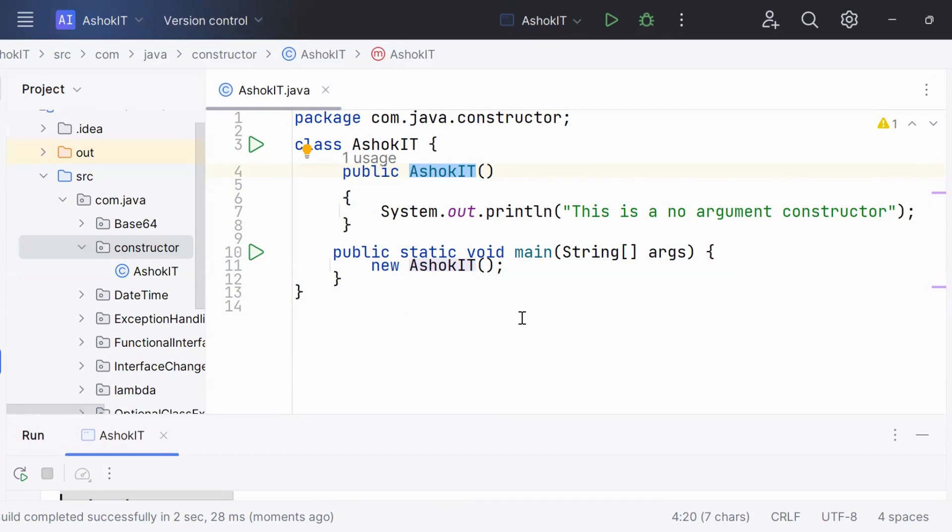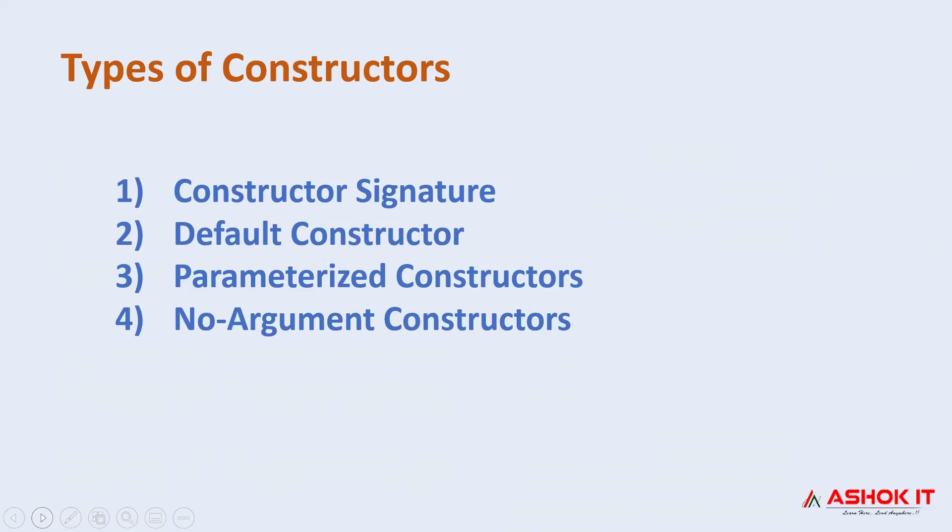Now let's move to the third type of constructor, that is parameterized constructor. The next type of constructor is parameterized constructor. A constructor with arguments or parameters is known as parameterized constructor. We shall go through the example to understand the parameterized constructor.